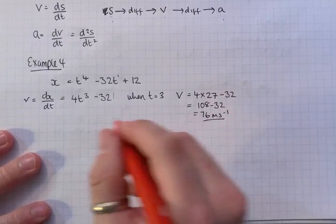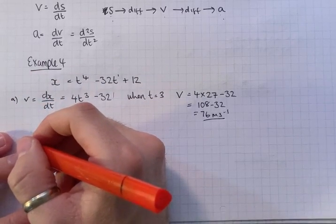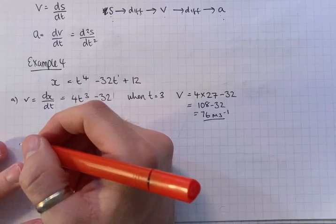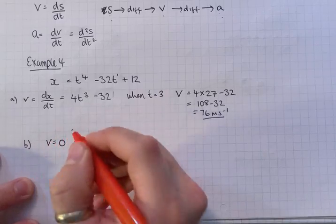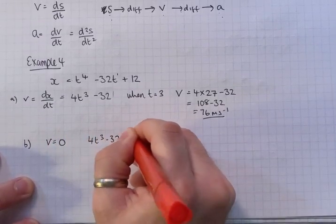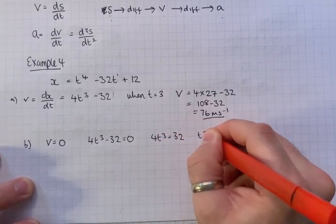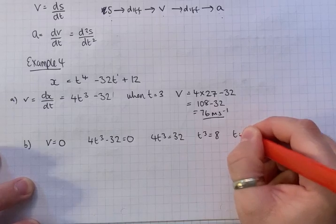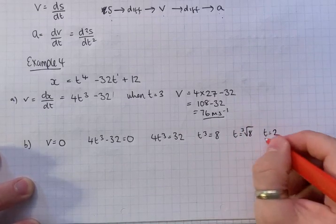Okay, B. B asks for the value, the values for t, which P is at rest. So it's at rest when the velocity is 0. So we've got 4t³ minus 32 equals 0. 4t³ equals 32. t³ equals 8. t equals the cube root of 8, which is 2, only the positive value of 2.